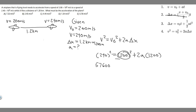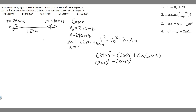Moving 200 squared to the other side: 240 squared minus 200 squared equals 17,600, and that equals 2 times a times 1,200. Then 2 times 1,200 is 2,400, so we have 17,600 equals 2,400a. Dividing both sides by 2,400 gives us a.